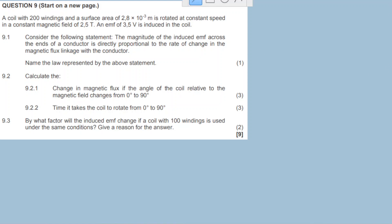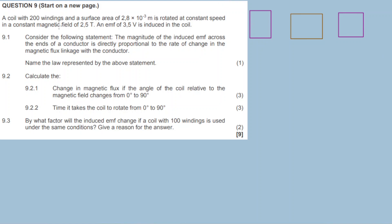Let me give a visual of this problem. Here's a magnet, and here's another magnet, and we also have this coil. They don't specify the coil is rectangular or whatever, but the coil is rectangular in shape. We have a north pole and a south pole, and the magnetic field lines go from north to south.